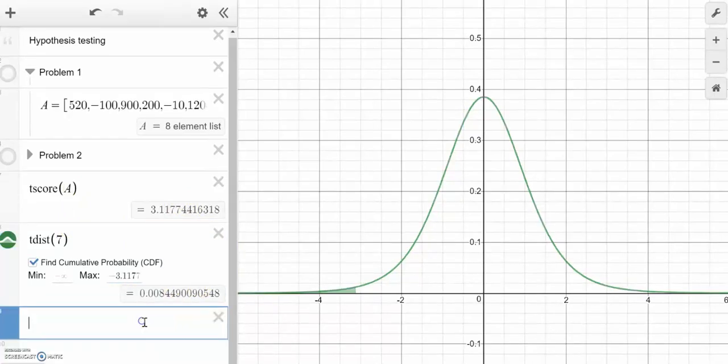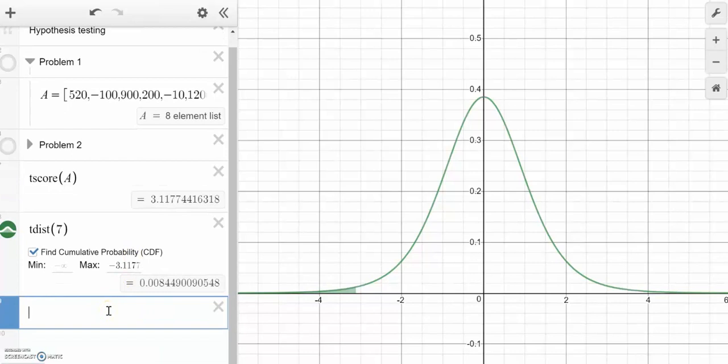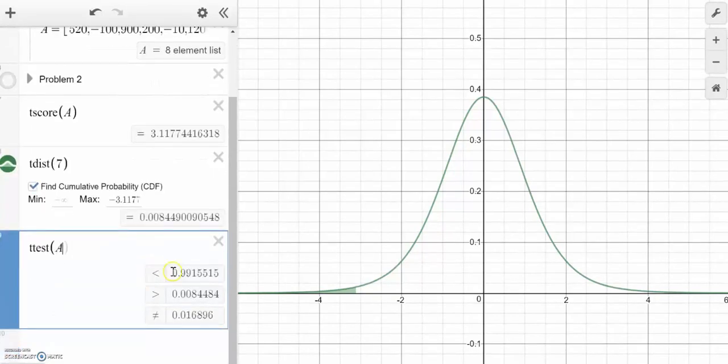But there's also a dedicated command for t test. I can do t test. I need two t's here. t test for column A. And it will give me three different things here. It will give me, based on the test statistic, the less than 3.12, the greater than, and also the not equal to.